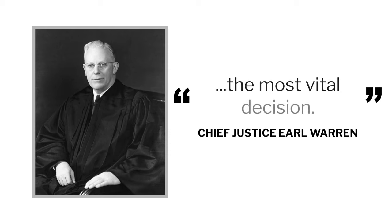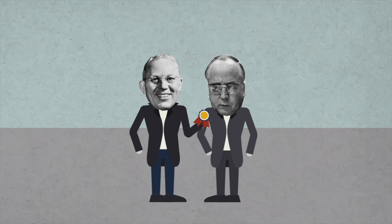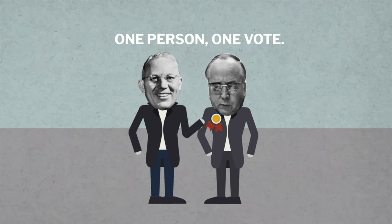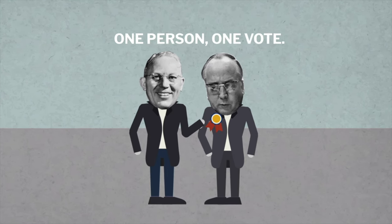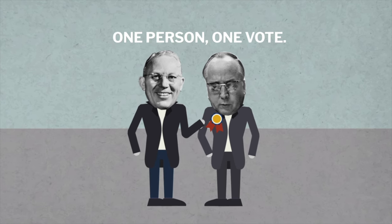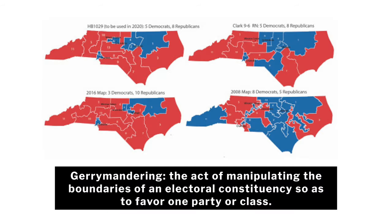After he retired from the court, Chief Justice Earl Warren called Baker vs. Carr the most vital decision during his time as a justice because it helped establish the principle of one person, one vote, and restored democratic and equal representation throughout state legislatures. Issues raised by Baker vs. Carr remain relevant as courts and legislatures debate issues of controversial apportionment and gerrymandering.